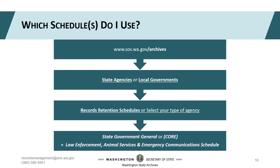This gives you several different places to look to find the right retention. It's important to understand the differences between the two general schedules and your agency-unique schedules. The CORE or state general schedule covers the administrative functions all agencies perform — financial management, human resources, asset management, policy creation, and more. These schedules are most commonly about the agency operating on behalf of itself. Your sector or unique schedules cover functions and requirements specific to your particular agency, most commonly about the agency operating in service to others.